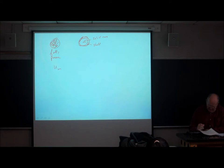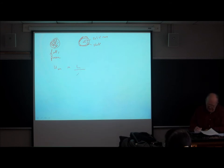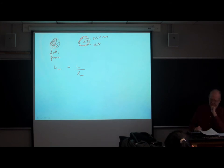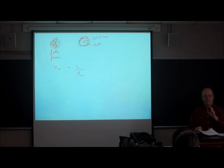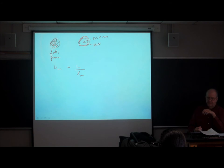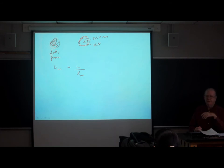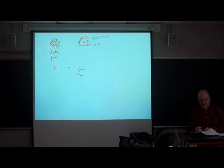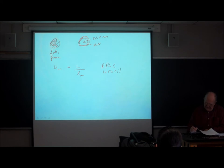The velocity of an unretained species is determined from the column length and a measurement of the dead time. To measure the dead time, you inject something that is not retained but small enough to fit in all the pores. In gas chromatography, we typically use a very light gas like methane. In liquid chromatography reverse phase, typical dead markers are uracil and thiourea.